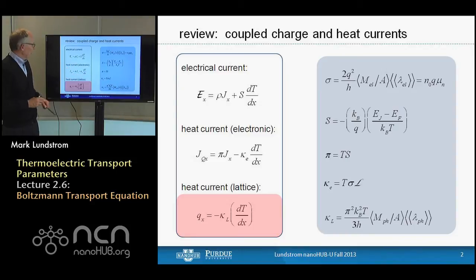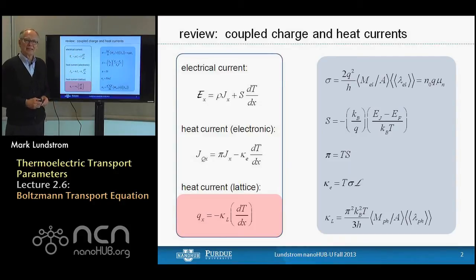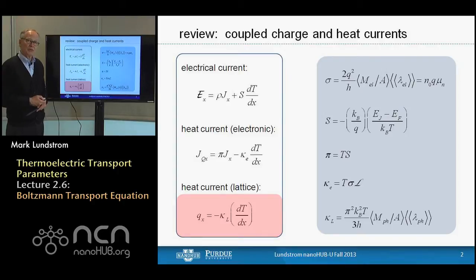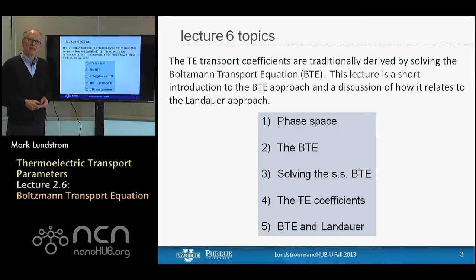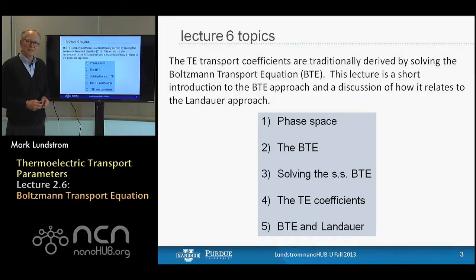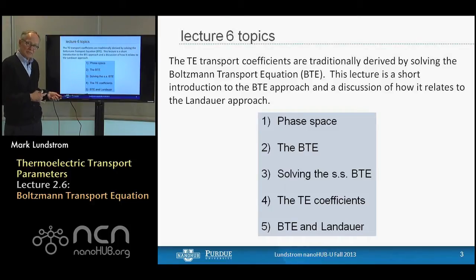These are the transport coefficients and coupled current equations that we're now familiar with. We've derived the transport coefficients and expressed them in a couple of different ways. What we'd like to do in this lecture is to show how these coefficients are derived from the Boltzmann transport equation. Traditionally, the transport coefficients that we've been discussing are derived by solving the Boltzmann transport equation, and we want to relate that to the work we've done.